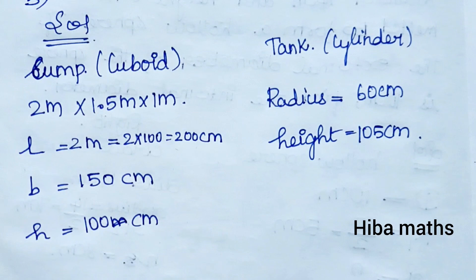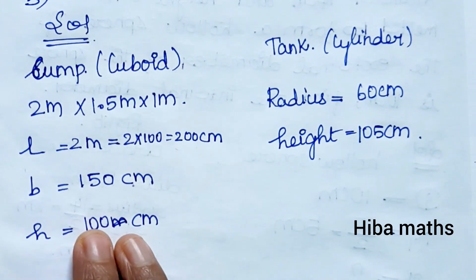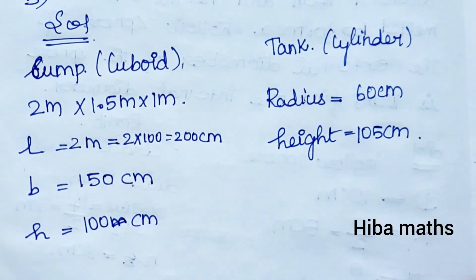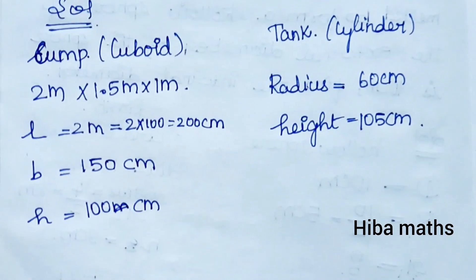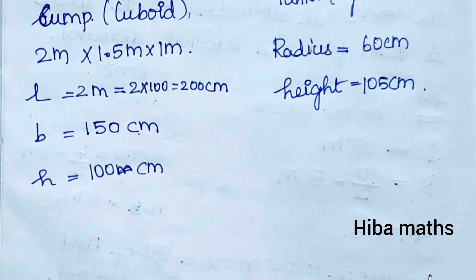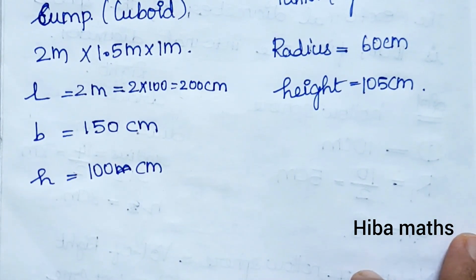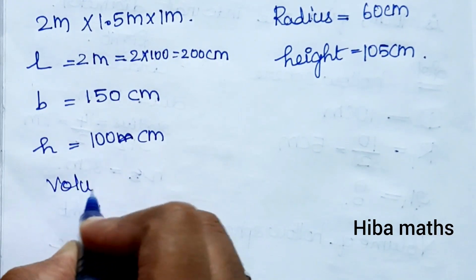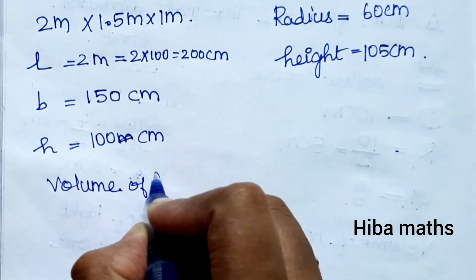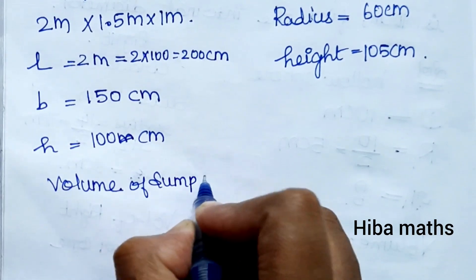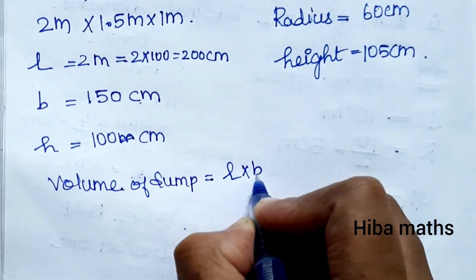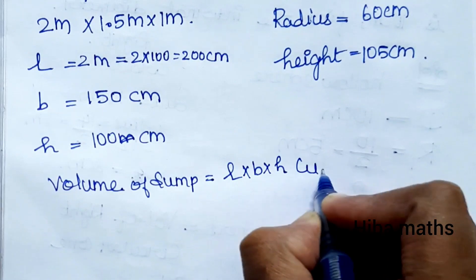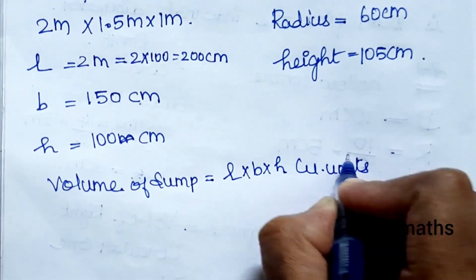The approach is: volume of sump minus volume of overhead tank. First, we find the volume of the cuboid using the formula L × B × H (cubic units).